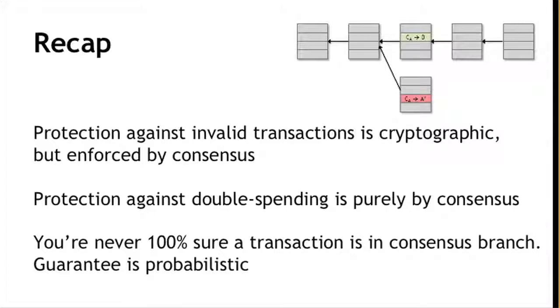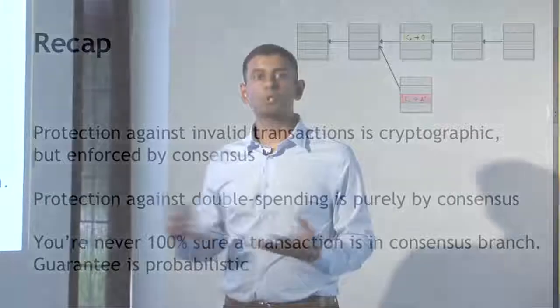Let's recap. Protection against invalid transactions — a malicious node making up a transaction to steal someone's bitcoins — is entirely cryptographic, but it is enforced by consensus: if a node attempts that, the only reason it won't end up in the long-term consensus chain is because a majority of nodes are honest and treat that transaction as invalid. Protection against double spending is purely by consensus — cryptography has nothing to say about this, since transactions representing a double-spend attempt look identical from the perspective of signatures. And you're never 100% sure that a transaction you're interested in is on the consensus branch, but this exponential probability guarantee is pretty good — after about six confirmations, there's virtually no chance of going wrong.